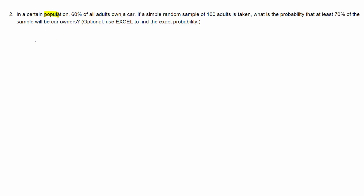Here we are dealing with a population of car owners and we know that 60% of these actually own cars. The question is now, if we take a random sample of 100 adults, what's the probability that in that sample at least 70% of them will be car owners?